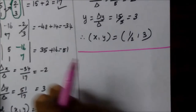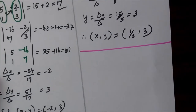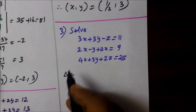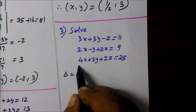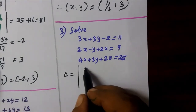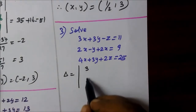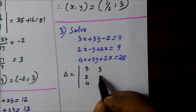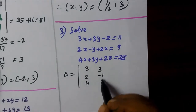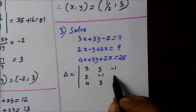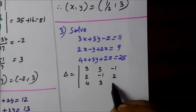Third question. Now we need to set up the system. The coefficients are 3, 2, 4, then 3, minus 1, 3, then minus 1, 2, 2.